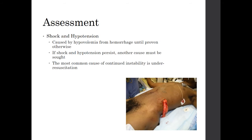When assessing the patient, assess for causes. Shock and hypotension may be caused by hypovolemia from hemorrhagic blood loss until proven otherwise. If shock and hypotension persist, another cause may be sought including cardiogenic or septic. The most common cause of continued instability is under-resuscitation and not active bleeding. This image shows a stab wound to the abdomen on a trauma patient — what appears to be the omentum that was pulled out. This patient is certainly at risk for severe acute intra-abdominal blood loss and requires an operative procedure.